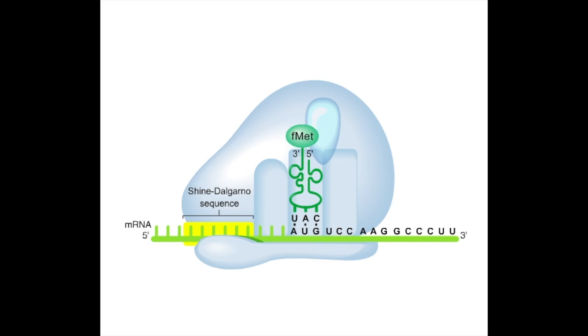Once translation initiation is complete, elongation begins. The elongation phase consists of three steps: